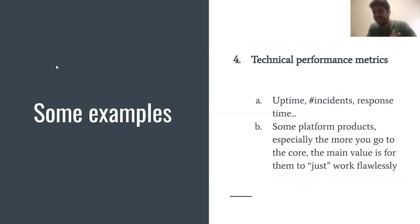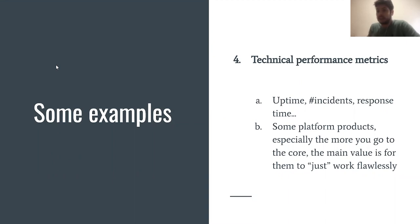A third example is extensibility metrics. If your platform has ways to be extended, it's sometimes very useful to measure how many extensions your customers are putting in place. And while I argued against technical performance metrics earlier, sometimes the key value proposition of a platform product is simply to work — to be scalable and stable. In those cases, the right KPIs actually are technical performance metrics: uptime, number of incidents, response times, and so on. So don't take my earlier argument too far — in some cases, they are the right metrics.